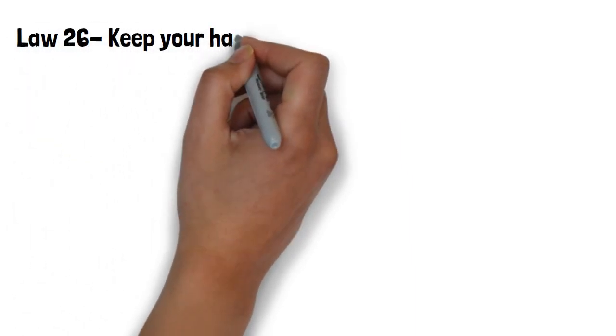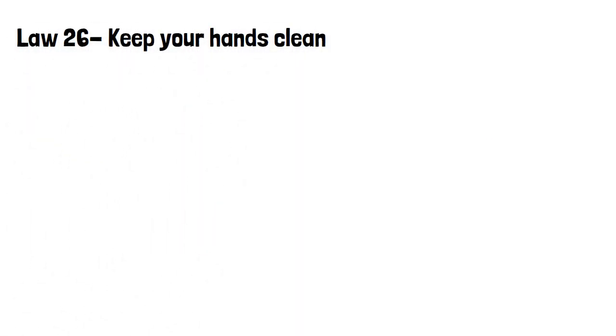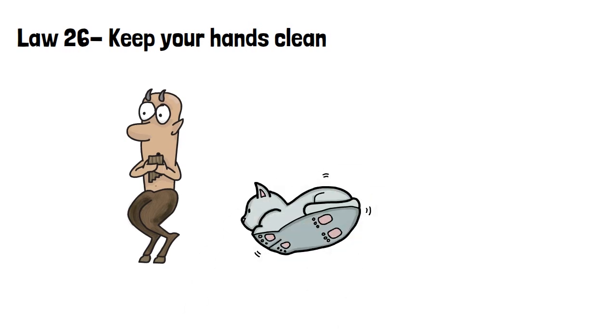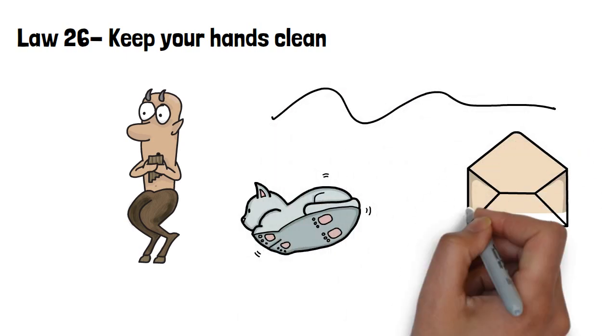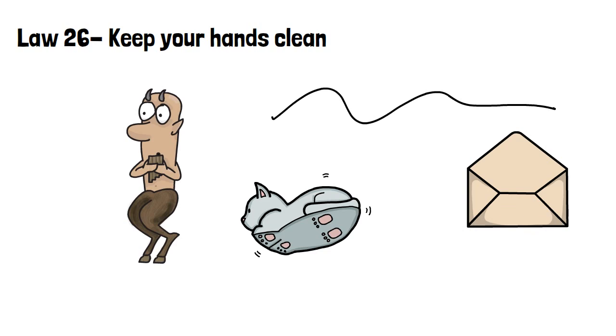Law 26, keep your hands clean. Hide your mistakes. Have a scapegoat to blame. Also, you will need a cat's paw. This is someone who does your dirty work for you while concealing your involvement. This can mean letting someone else be the bearer of bad news while deciding to associate yourself with the good.